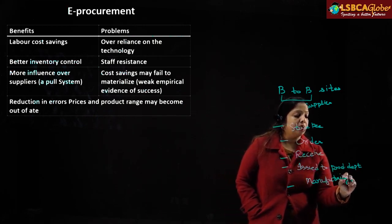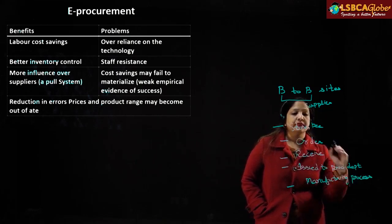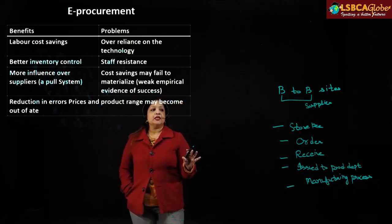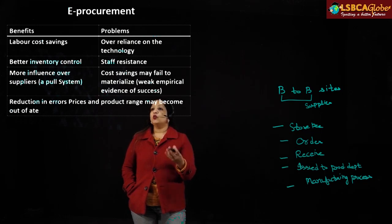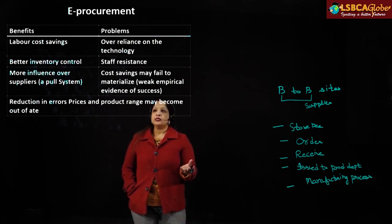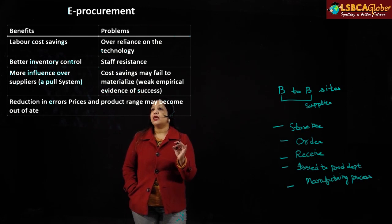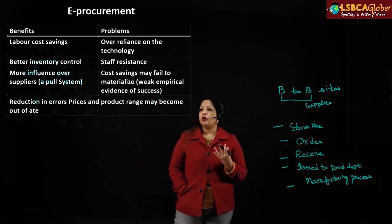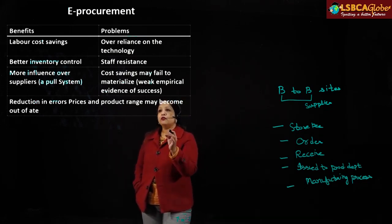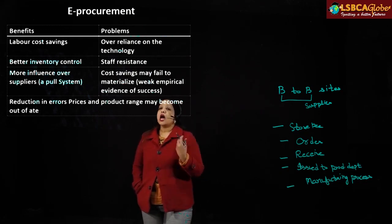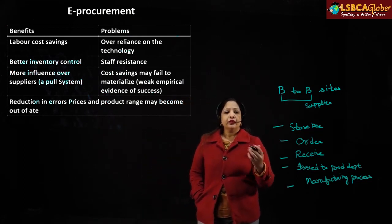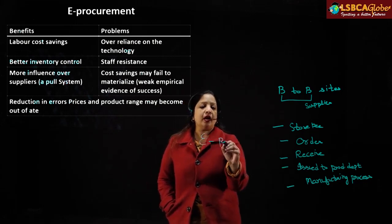In the normal purchase cycle, the storekeeper states the requirement, we control to whom the supply order is given, we agree on the price, we receive the goods, we check whether we have received the correct goods, we store them, and later issue them to the production department. Then we make arrangements for payment to the supplier.